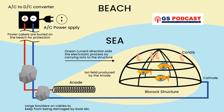Different types of marine species need habitats of different sizes and shapes. So Biorog structures can be made in different forms to help in the survival and growth of different species, including corals, seagrass, oysters, and other marine ecosystems. This is the process of Biorog formation.